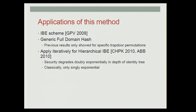We apply this method to the IBE scheme of GPV from 2009, proving its security in the quantum random oracle model. We also apply it to the full domain hash signature scheme for any possible secure trapdoor permutation — previous results only proved it for specific types. We also apply our result iteratively to two hierarchical IBE schemes, proving their security. However, in our proof the security degrades doubly exponentially with the depth of the identity tree, whereas classically the dependence is only singly exponential, so we can only handle somewhat shallower identity trees than in the classical proof.